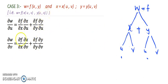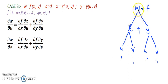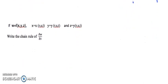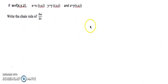Next we want to find out the partial differentiation of w with respect to v. Here again, v is present in both branches. So first I will write the derivative of f with respect to x partially, and then x with respect to v, plus f with respect to y and y with respect to v. That will be the chain rule expression for ∂w/∂v.